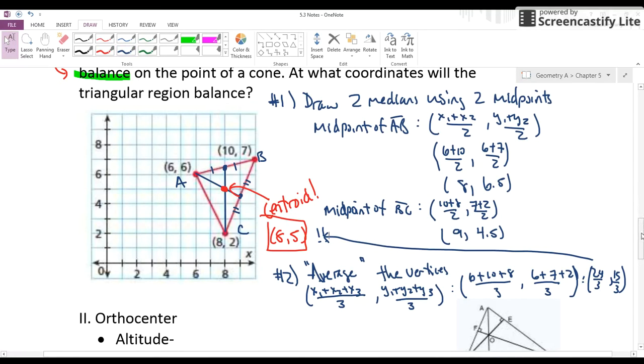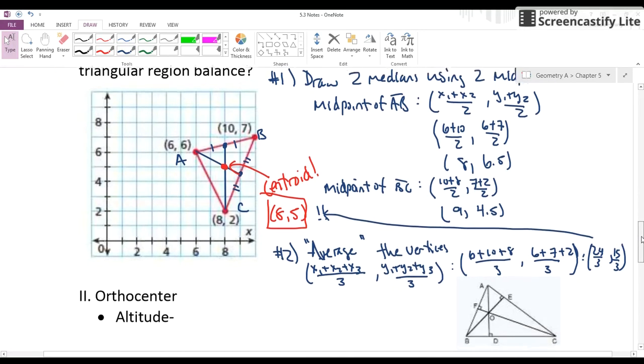So that is your centroid and centroid theorem. Three points of concurrency down. One left to go.